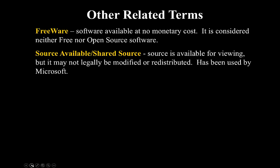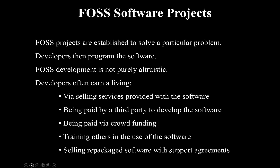This type of licensing has been used by Microsoft, for example. And finally, closed source, which is most proprietary software. A given piece of FOSS software is essentially considered a software project, established to solve some kind of problem. Developers program the software, and this development isn't purely altruistic — developers have to earn a living too. They can do this by selling services, being paid by a third party, crowdfunding, training others in the use of the software, or selling repackaged software with support agreements.